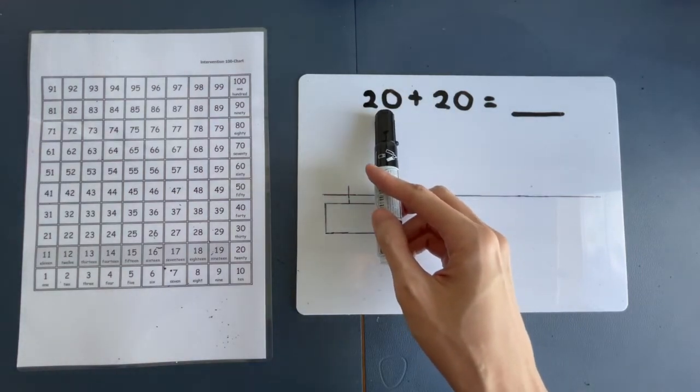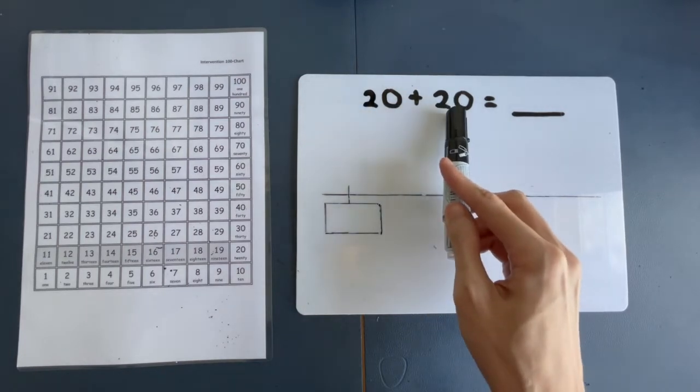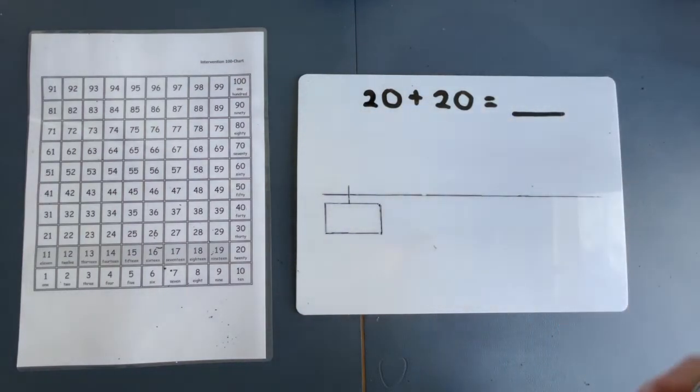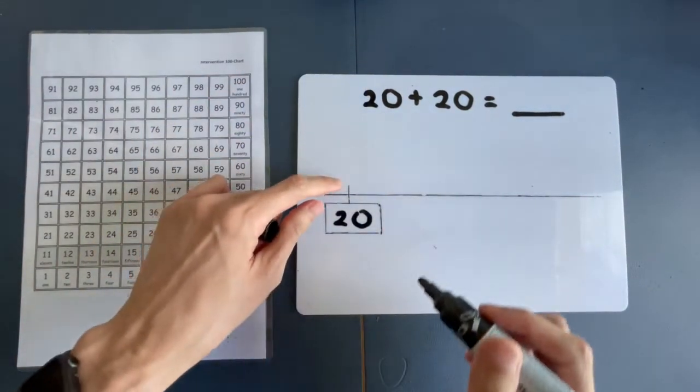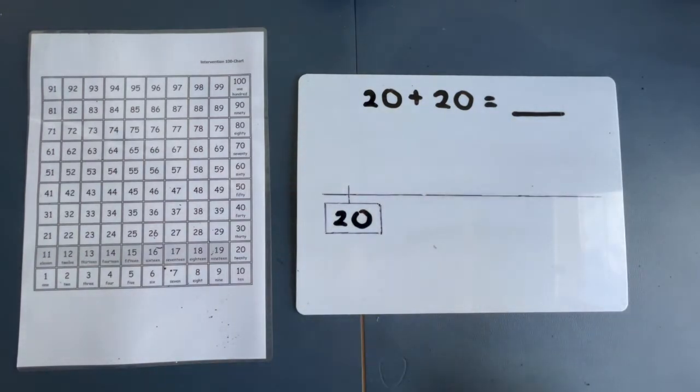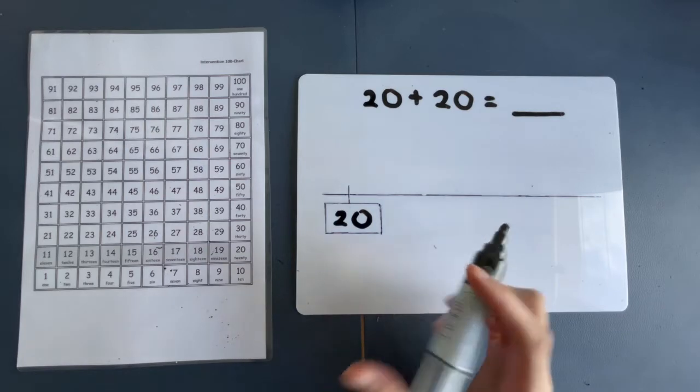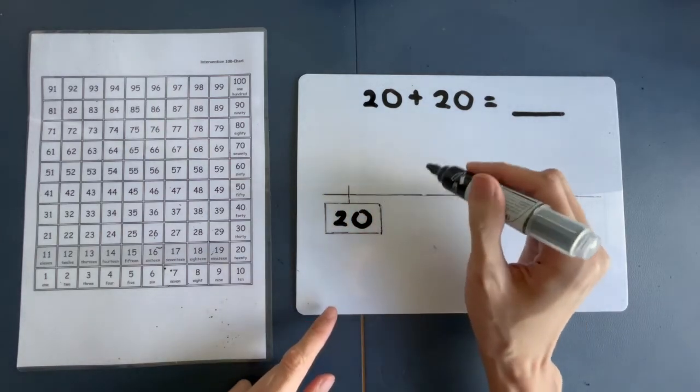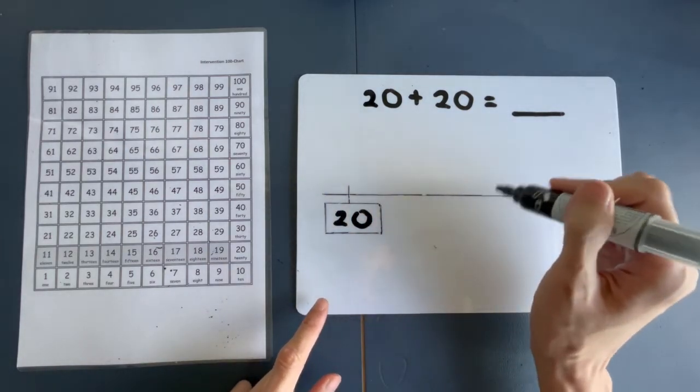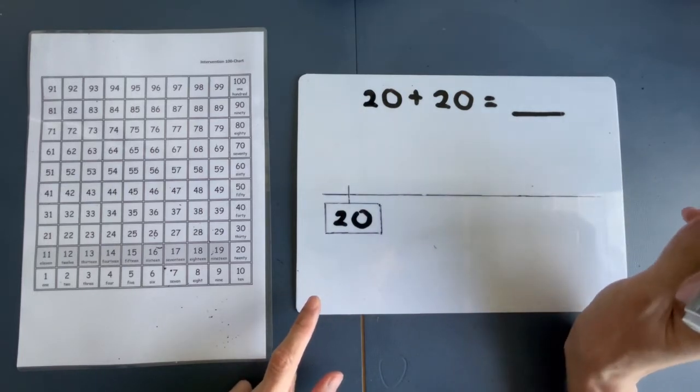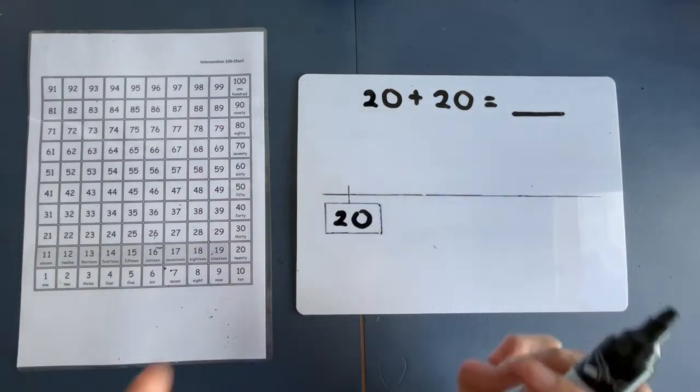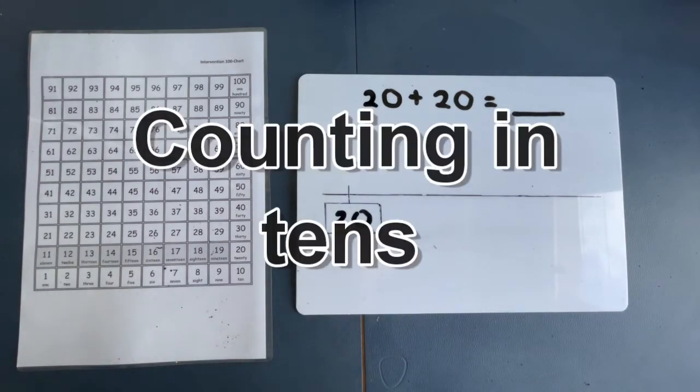This time, we're going to take 20 plus 20. And what is the answer? We're going to use the jump technique again. Copy down 20 into the start box. And we're going to start from here. This time, we're going to jump 20 times. Or are we? Are we really going to jump 20 times? 1, 2, 3, 4, 5, 6, 7, 8, 9, 10, 11, 12, 13, 14, 15, 16, 17, 18, 19, 20? No. We are actually going to use a shortcut, and it's called counting in 10s.